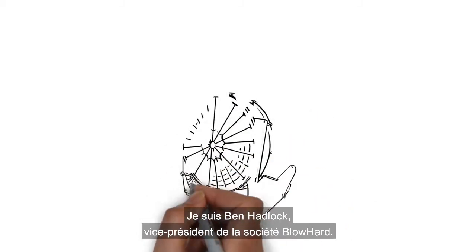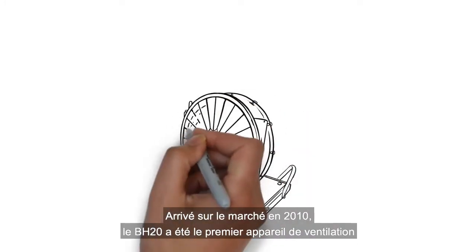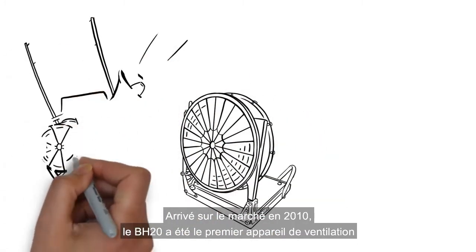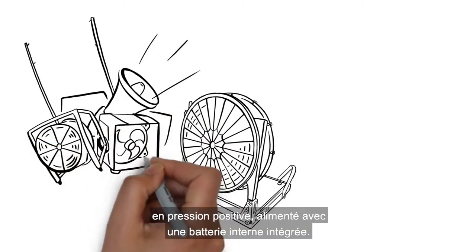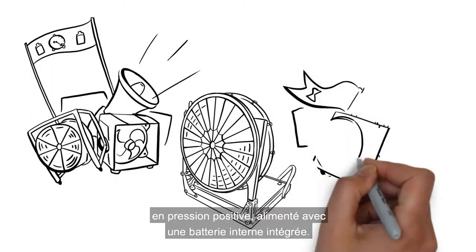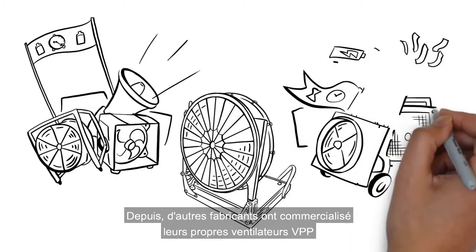Hello from Blowhard. I'm Ben Hadlock, Vice President and Blowhard Extraordinaire. In 2010, the BH20 entered the market as the first positive pressure ventilation fan powered with an integrated internal battery. Since then, other fan manufacturers have released their versions of PPV fans capable of running on batteries, and with those, a host of new marketing efforts.